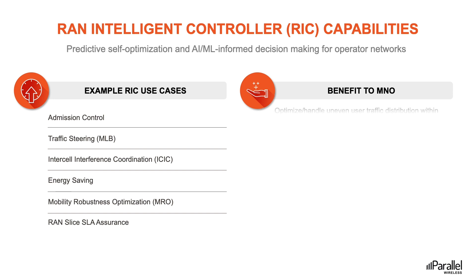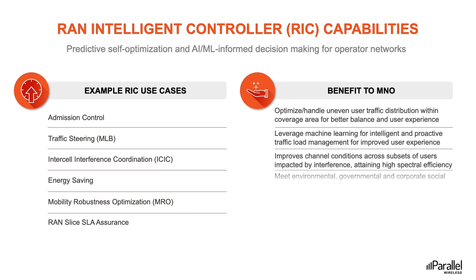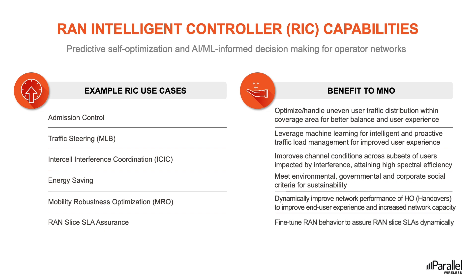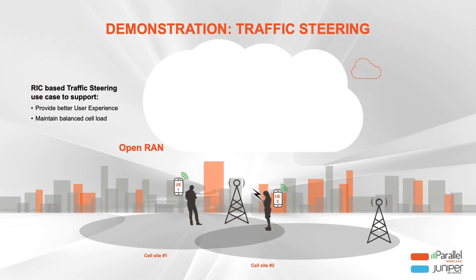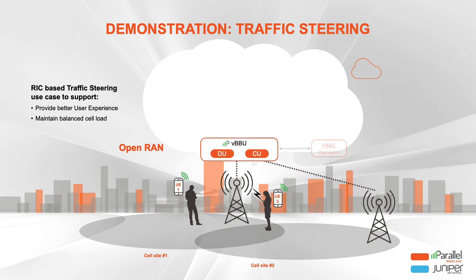These use cases help operators improve coverage and capacity and launch new revenue-generating services. Examples include admission control for handling uneven user traffic distribution, MRO to improve handover performance, and RAN slice assurance — an important capability for emerging 5G enterprise applications that provides particular services such as enhanced end-to-end security, low latency performance, or other services over the 5G network. Let's take a look at one RIC use case in action: traffic steering.